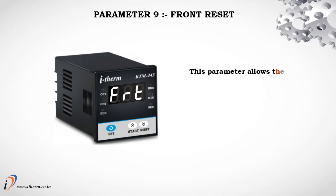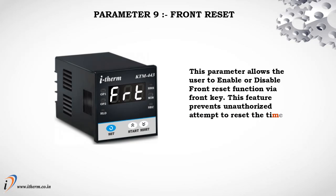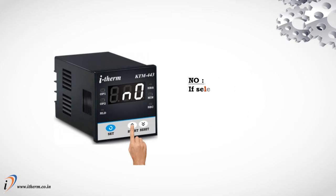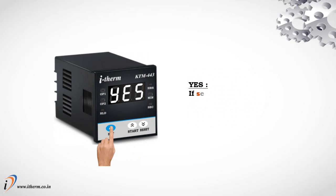Parameter 9: Front reset. This parameter allows the user to enable or disable the front reset function via the front key. This feature prevents unauthorized attempts to reset the timer during run mode. If selected No, the timer cannot be reset through the front panel. If selected Yes, the timer can be reset through the front panel.